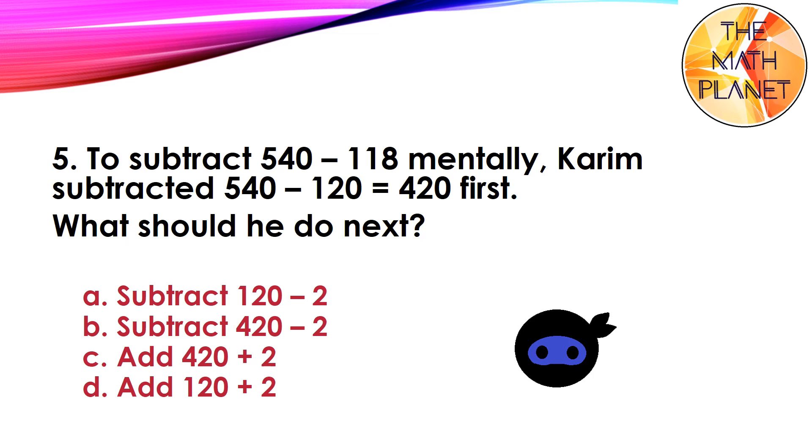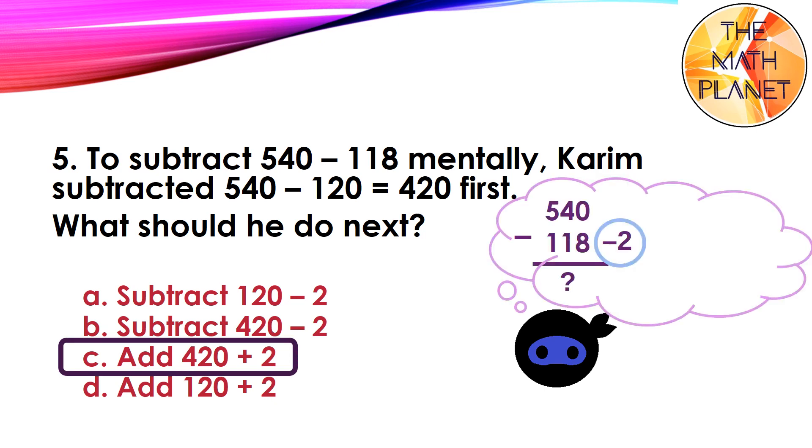The correct answer is C. Because Kareem thought first of subtracting an extra 2, he needs to compensate by adding an extra 2 to the difference.